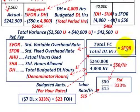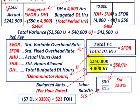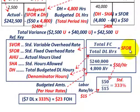To calculate the standard fixed overhead rate, you take total budgeted fixed costs for the period and divide by the total budgeted direct labor hours. For example, if total fixed costs are $240,000 and budgeted direct labor hours are 4,800, the division gives $50 per hour as the standard fixed overhead rate. So for every direct labor hour worked, $50 is assigned to fixed overhead cost.